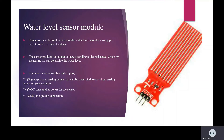Secondly, I will explain what the water level sensor module is. This sensor can be used to measure the water level, monitor a sump pit, detect rainfall, or detect leakage. The sensor produces an output voltage according to resistance, which by measuring we can determine the water level. The water level sensor has only three pins: the signal pin is an analog output connected to one of the analog inputs on your Arduino; the VCC pin supplies power for the sensor, recommended between 3.3 and 5V; and the analog output will vary depending on the voltage provided for the sensor.